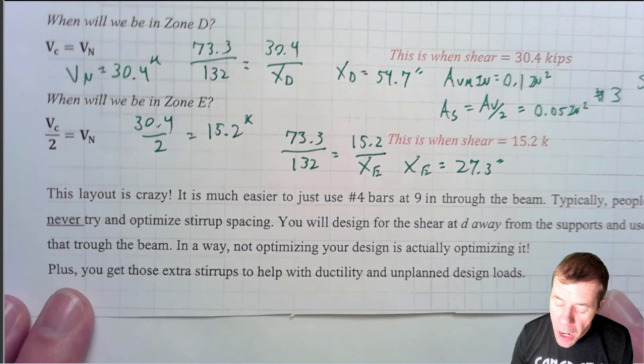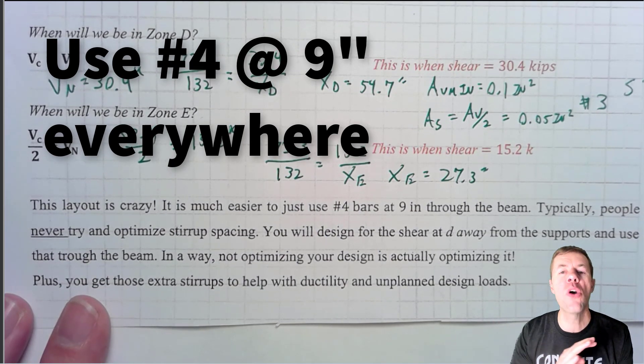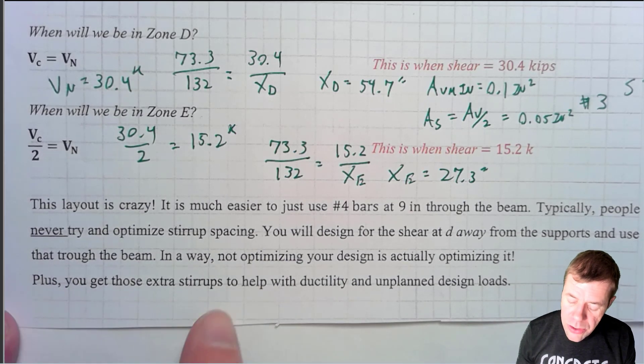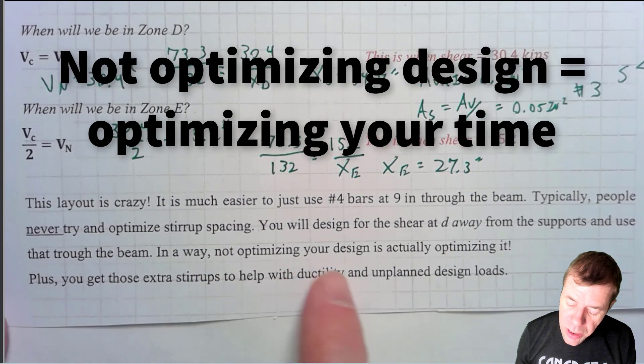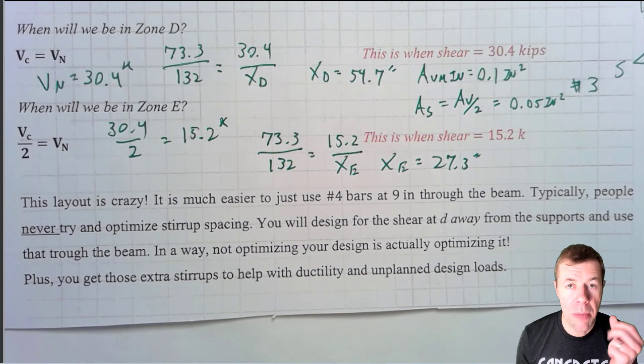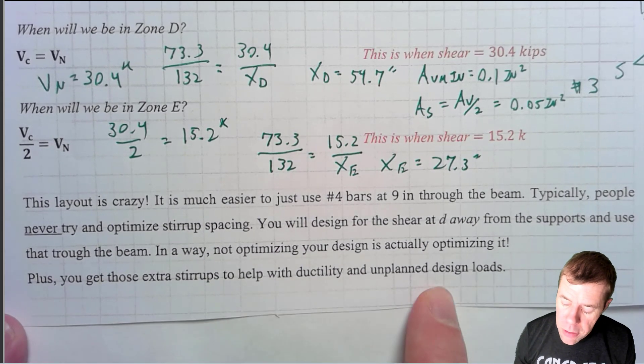In my opinion, it's much easier to just use number fours throughout the entire beam at 9 inches. People don't typically do this kind of optimization except in very rare cases where they're doing a member hundreds of times and saving about $30 a member adds up. Not optimizing your design is actually optimizing it — because it optimizes for your time. Time is money, and time on a test is points. Plus, you get extra stirrups to help with ductility and any unplanned design loads.